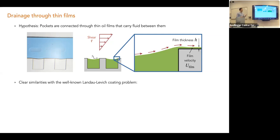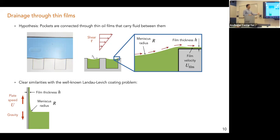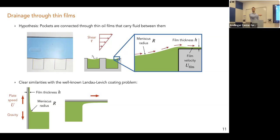So a hypothesis: the pockets are actually connected, but they are connected through very thin films that we cannot observe with the naked eye. This has a very clear resemblance with a very well-known problem in fluid mechanics, which is called the Landau-Levich problem or the dip coating problem. We have a plate that is released from a bath slowly, and we want to know what is the film thickness that sticks to the plate. That is a very important problem, industrially, because a lot of coatings are actually done in this way.